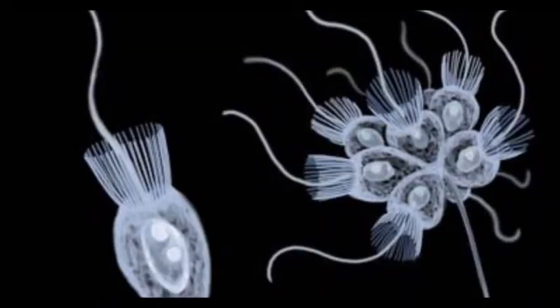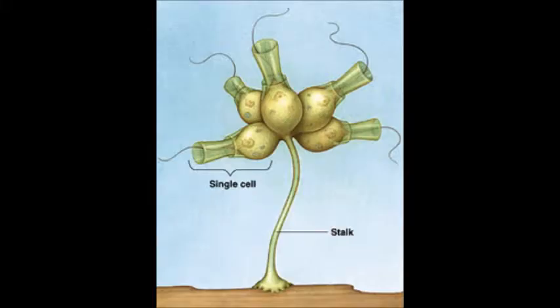Our closest non-animal relatives are called choanoflagellates, with whom we share a common ancestor that lived about 800 million years ago. Interestingly, these unicellular organisms contained the primers for the creation of multicellular ones, such as receptor tyrosine kinases, cadherins, and integrins.